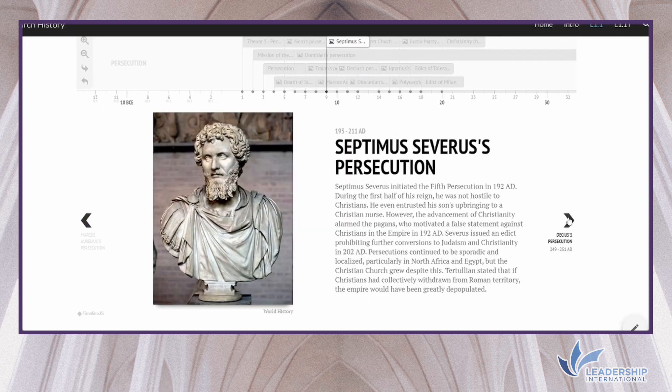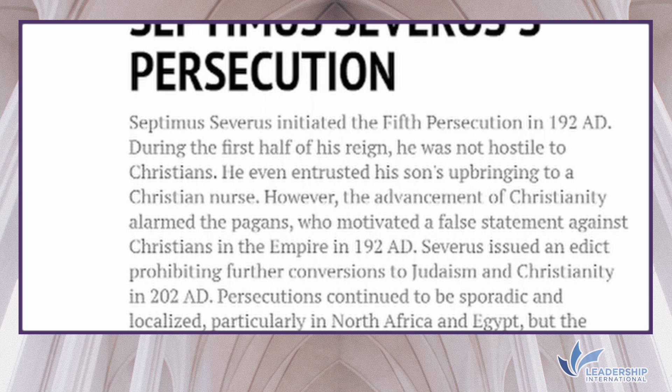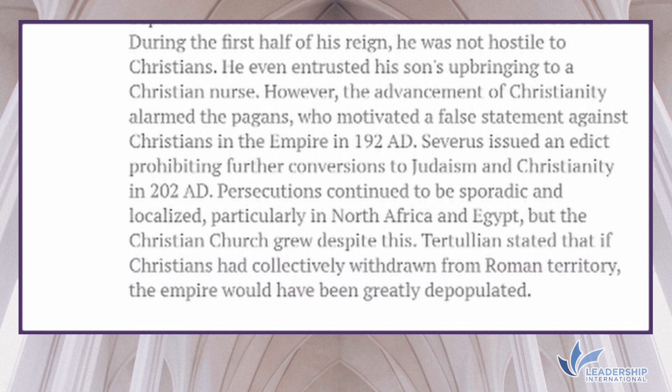Septimus Severus initiated the fifth persecution in 192 AD. During the first half of his reign he was not hostile to Christians — he even entrusted his son's upbringing to a Christian nurse. However, the advancement of Christianity alarmed pagans, who motivated false statements against Christians. Severus issued an edict prohibiting further conversion to Judaism and Christianity in 202 AD. Persecutions continued to be sporadic and localized, particularly in North Africa and Egypt, but the Christian church grew despite this. Tertullian stated that if Christians had collectively withdrawn from Roman territory, the empire would have been greatly depopulated.